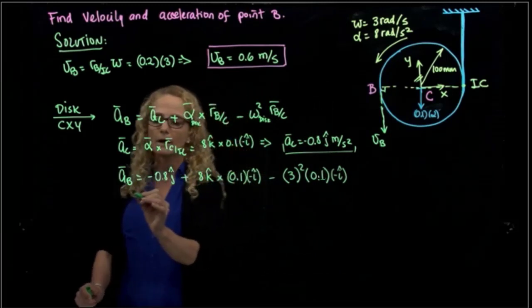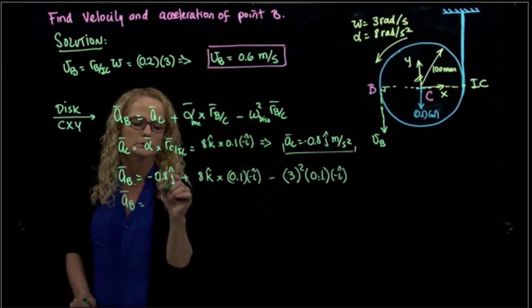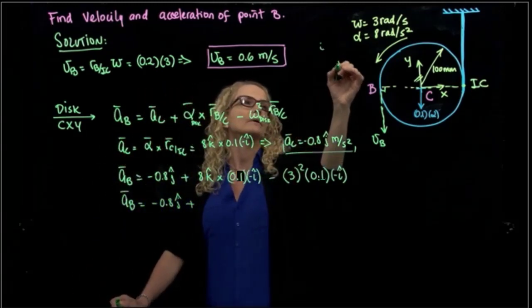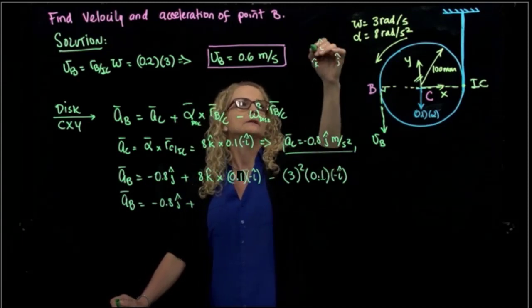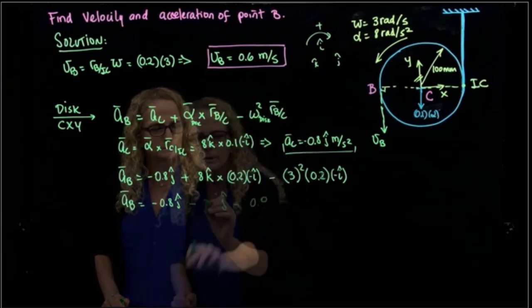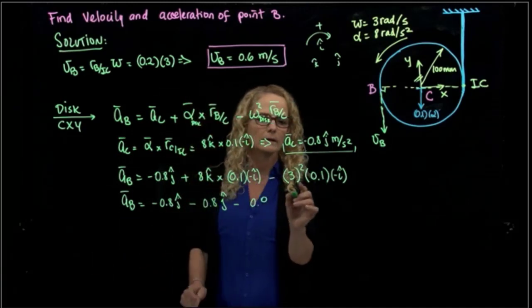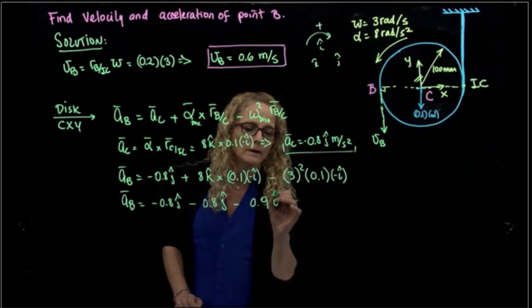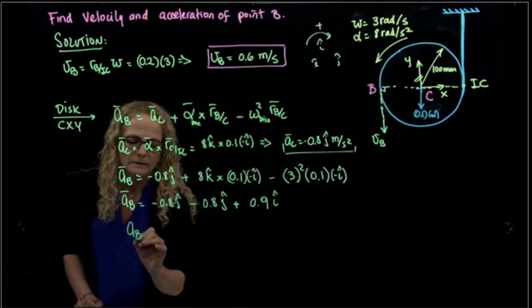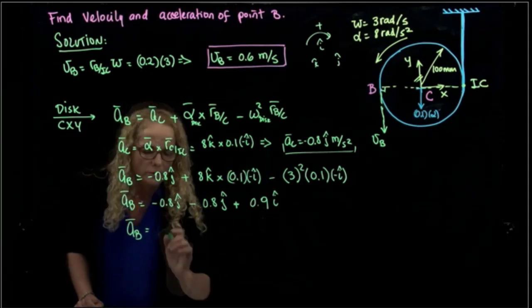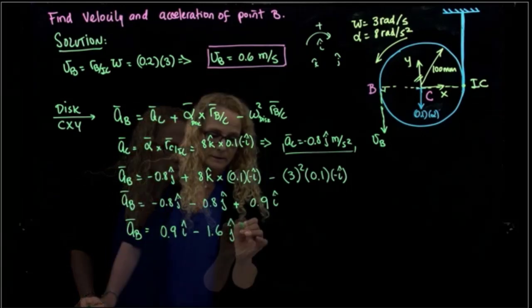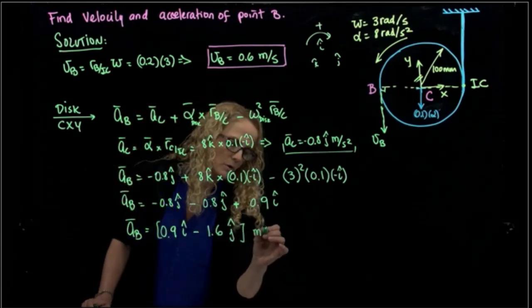So finally we have the acceleration of B will be equal to negative 0.8 in j, plus K times i (you always remember K times i is j). With this negative i, give me a negative value in j, 0.8. And here we have 0.9 in i. Negative times negative gives me a positive i. So finally, the acceleration of B will be equal to 0.9 in i, negative 1.6 in j. And that all is meters over seconds squared.